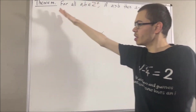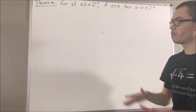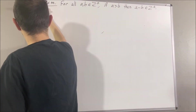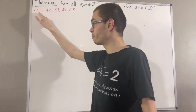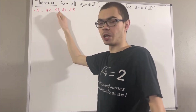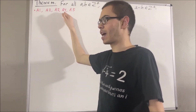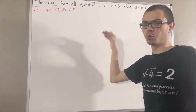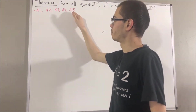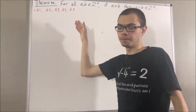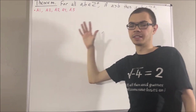Now, in proving this theorem, we are going to be using axioms 1, 2, 3, 4, and 5. Axioms 1, 2, and 3 are just the commutative, associative, and distributive laws. Axiom 4 tells us about the real number 0, and we have x plus 0 is equal to x for all real numbers x. Axiom 5 tells us every real number has a negative, and we have for all real numbers x, x plus the negative of x is equal to 0.